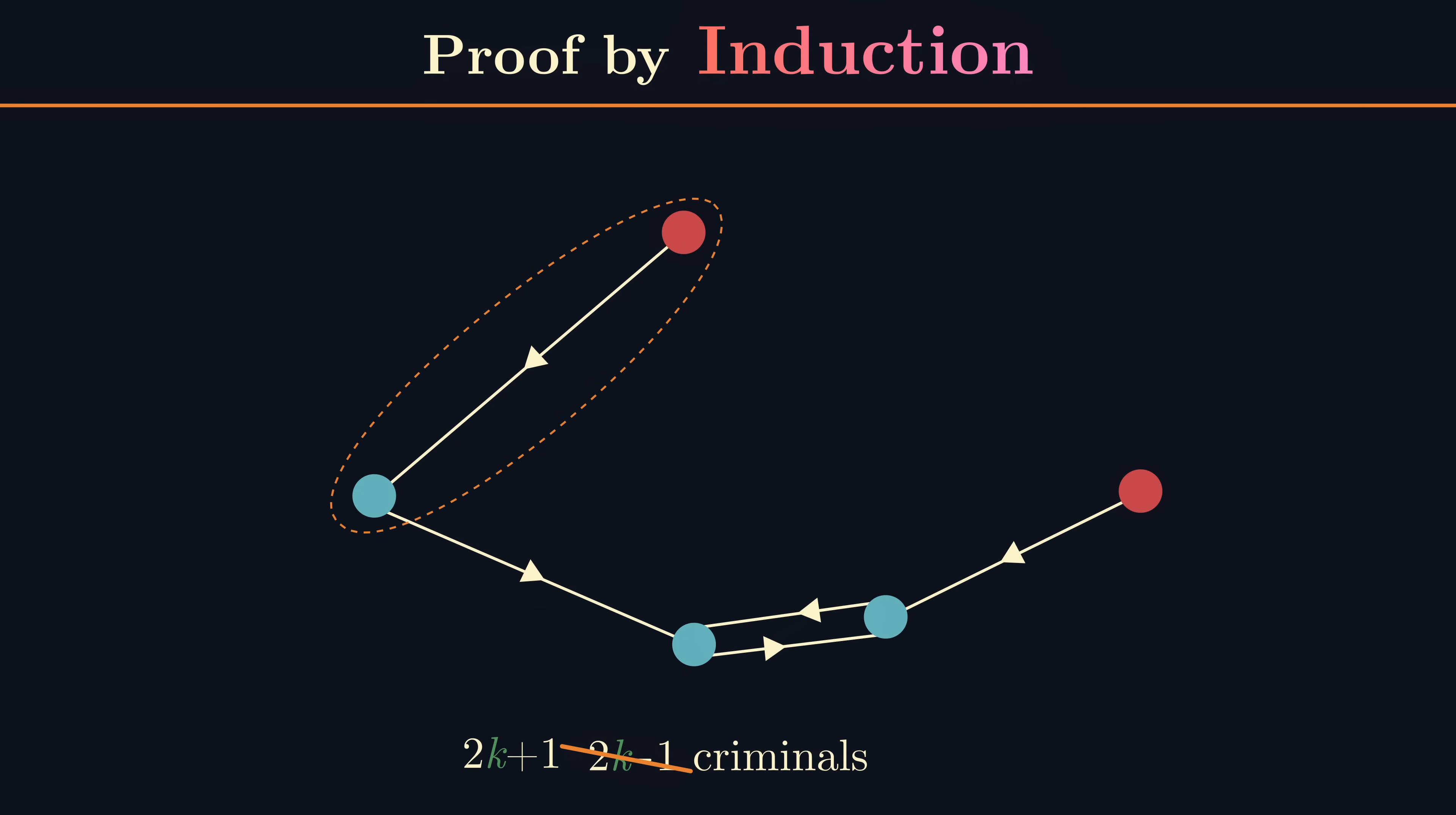By our assumption, in this new room there must be some unwatched criminal x. But when we go back and reintroduce a and b back into the room, some of these criminals might convert to watching a or b. But since the length of ab was minimal, then neither a nor b would convert to watching x, so this criminal x remains unwatched as required to complete the proof.